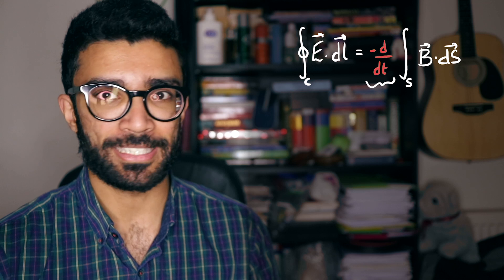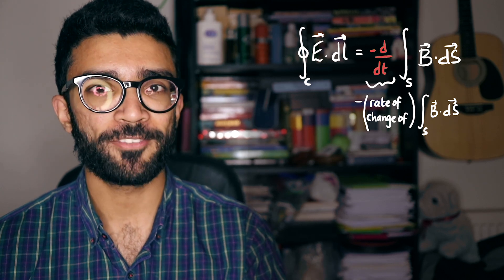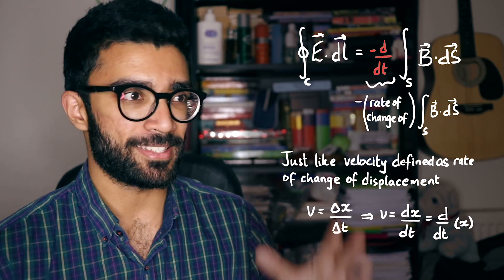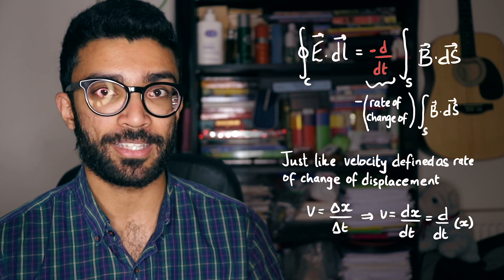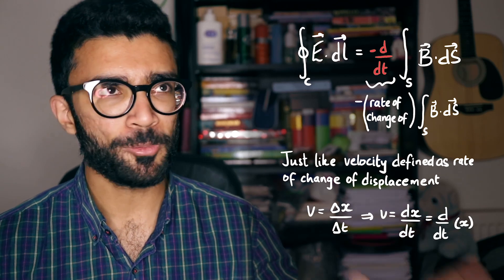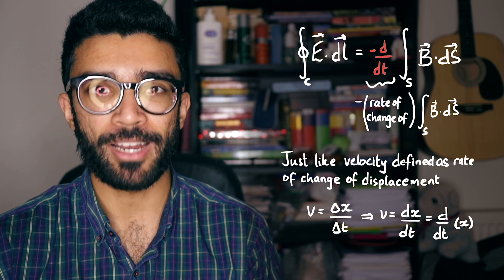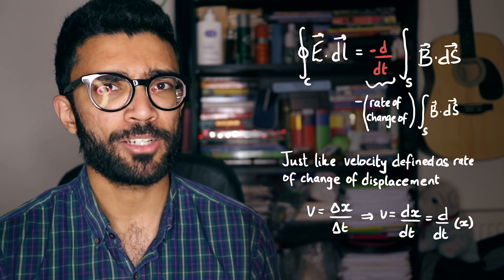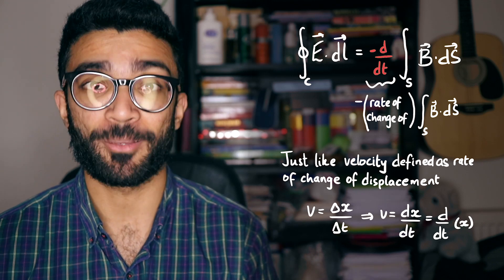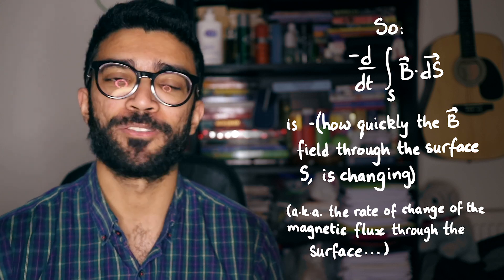We haven't talked about the d divided by dt term on the right-hand side. All this means is that we're finding the rate of change of the integral. Think of it like velocity: velocity is the change in distance delta x divided by the time interval delta t. Here we're doing exactly the same thing but more rigorously with calculus. The d in the numerator is analogous to delta x, and dt is analogous to delta t — so we're finding how fast the integral changes over time. The negative sign just gives us the negative value of this rate of change.